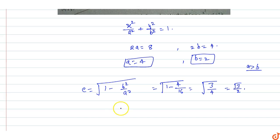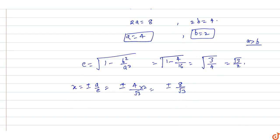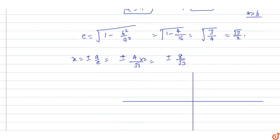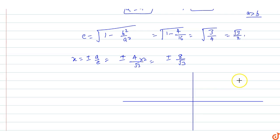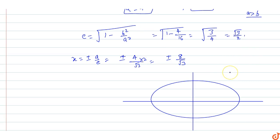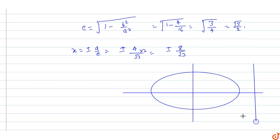This is an ellipse with eccentricity √3/2, major axis length 8, and minor axis length 4. The directrices are given by x = ±a/e. So x = ±4 divided by (√3/2), which equals ±8/√3.